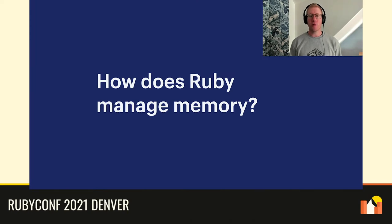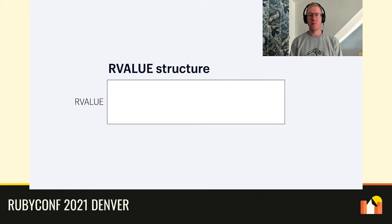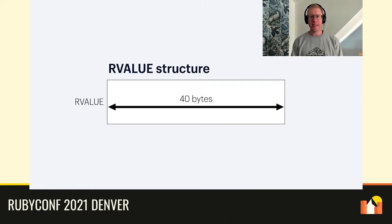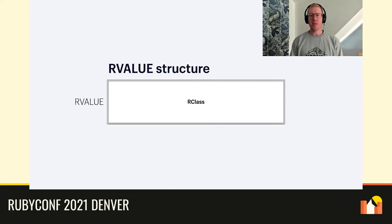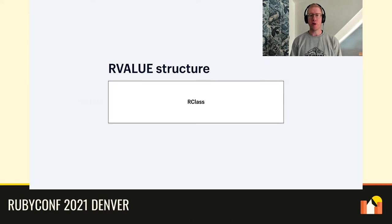When we create an object in Ruby, the interpreter stores a data structure called an R-value in memory to hold it. An R-value is always 40 bytes wide and contains a union of different data structures that represent all the possible Ruby core types. So we could have a structure representing a string, an array, or a class, and so on. Each one of these types contains its own fields and data structures specific to that type. The R-value itself is just a container for our Ruby objects.